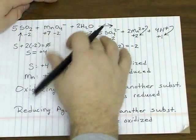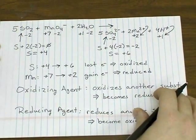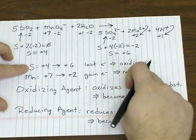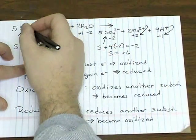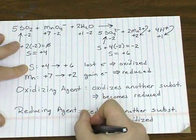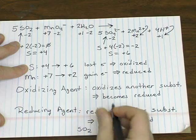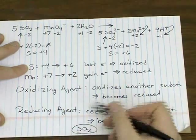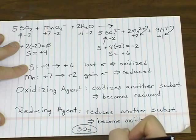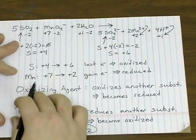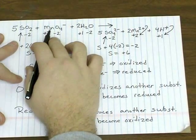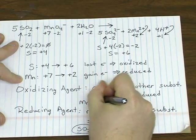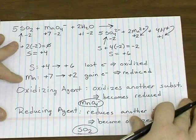So looking at the example that we just did, sulfur became oxidized. So we could say that sulfur is the reducing agent, but actually you refer to the whole compound as the agent. So for this example, sulfur dioxide is said to be the reducing agent, because the sulfur in this compound is becoming oxidized. Likewise, manganese and permanganate is becoming reduced. So permanganate ion is said to be the oxidizing agent in this case. I'll see you next time.